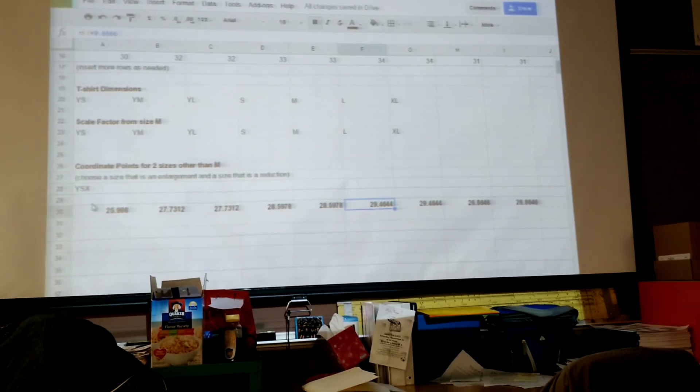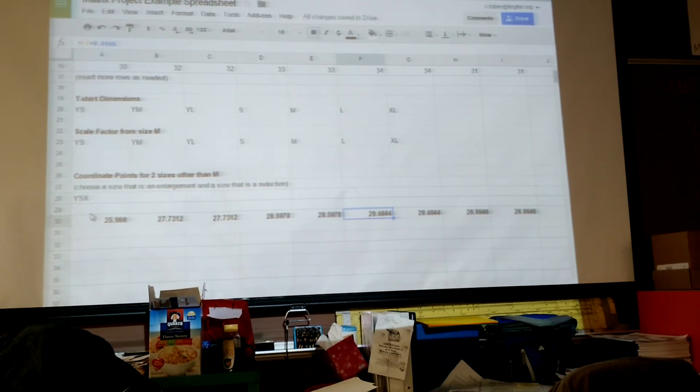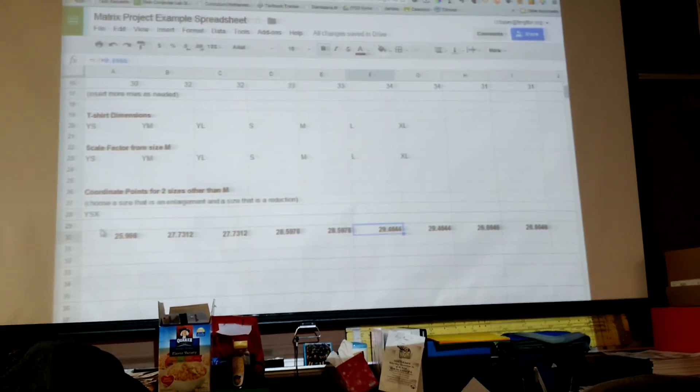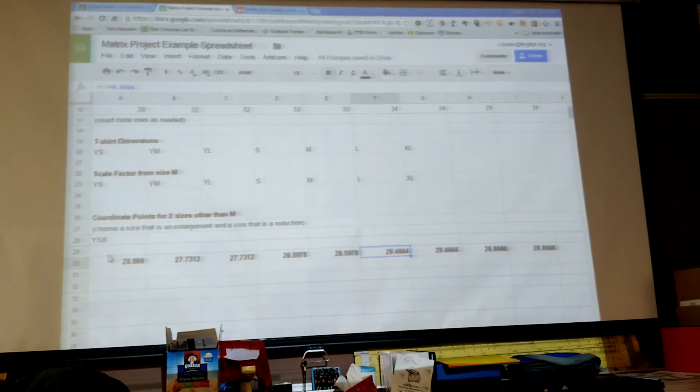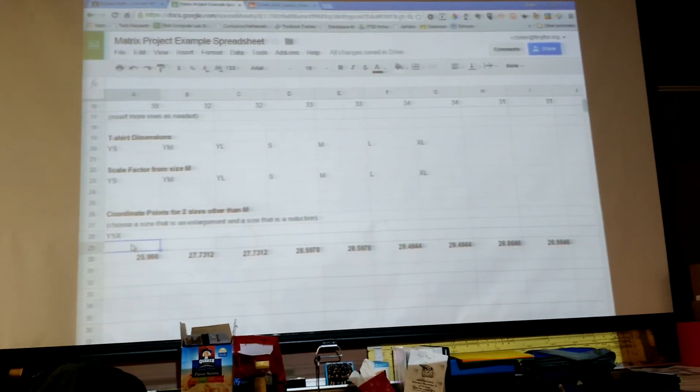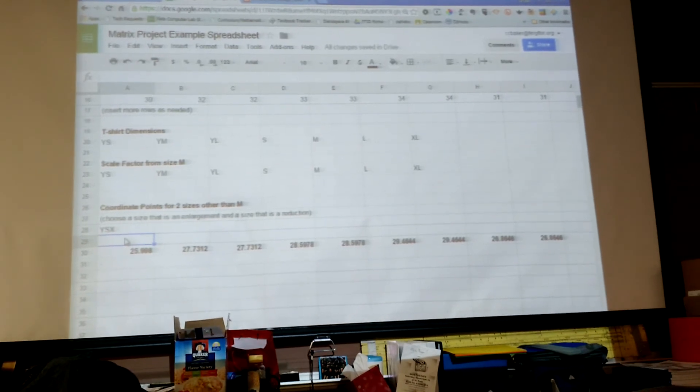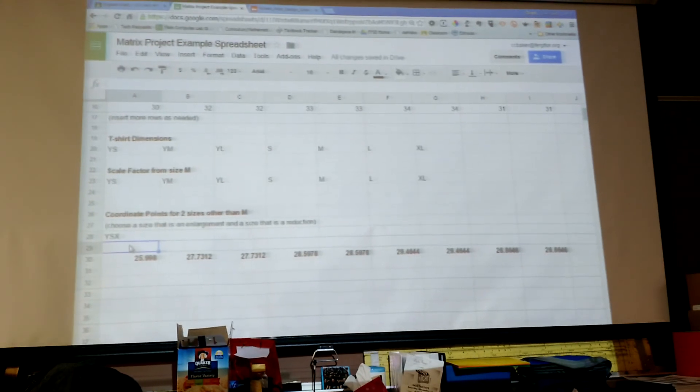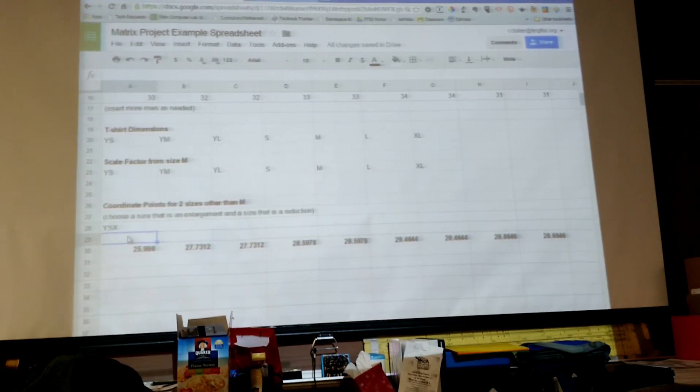The next step from here would be to find my scale factor for the x's of that one, and just put that in the row right above here. It would be times a different number. So that's how you do the scale factor and the new points.